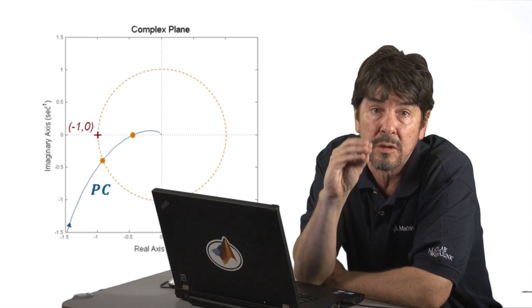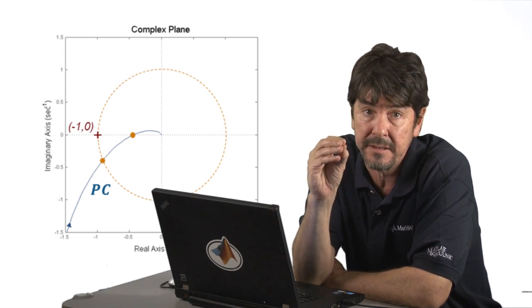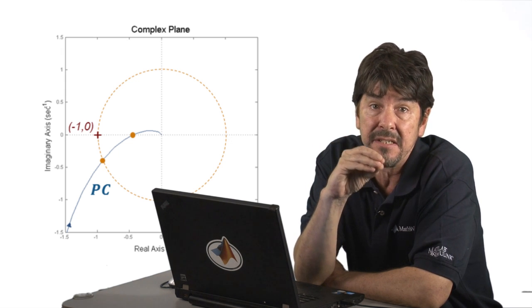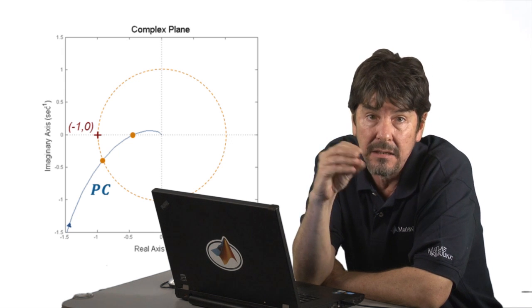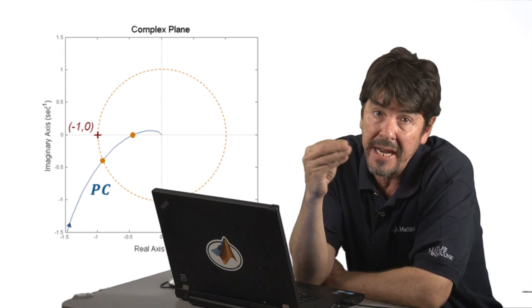To answer this, we will look at two critical points on our open-loop trace. One, where the magnitude of our trace is equal to 1, and the other, where the phase angle of our trace is equal to minus 180 degrees.